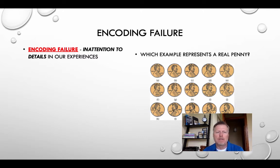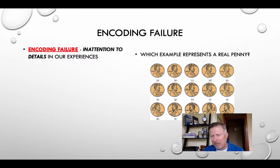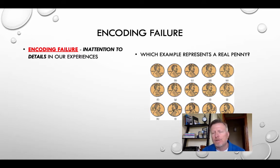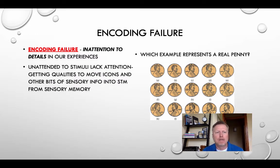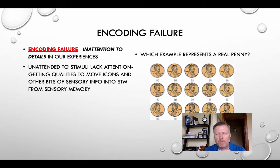This is probably due to encoding failure — basically an inattention to details. In our own experience, if somebody asked me to describe the features of a watch that I wear regularly, I may not be able to accurately do it. Could you identify, without looking, all of the app icons on your home screen on your phone? You might be able to identify where they are, but could you identify what they look like? That would be encoding failure if you can't. Unattended stimuli lacking attention-getting qualities won't move from sensory memory into short-term memory, and you need selective attention for this.